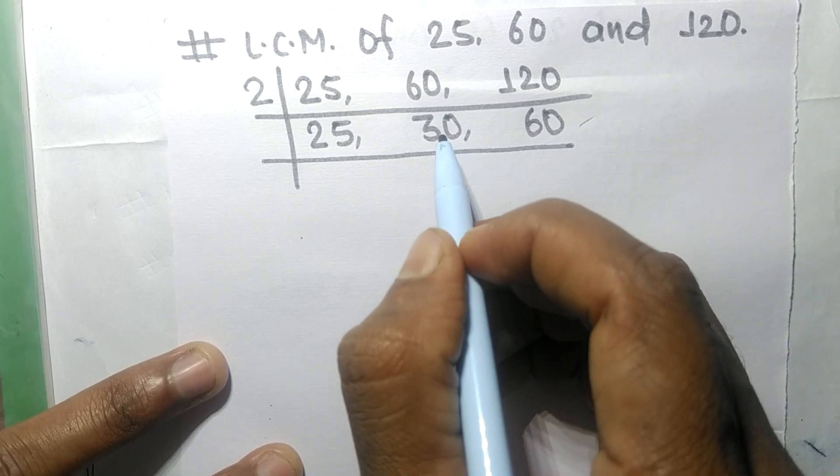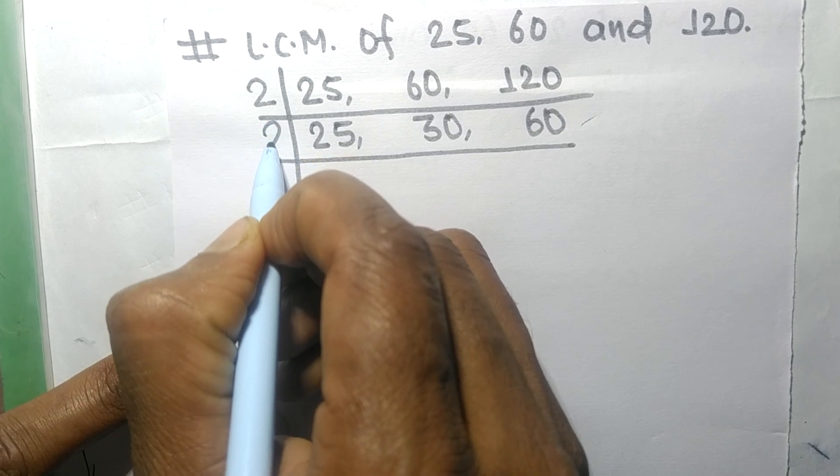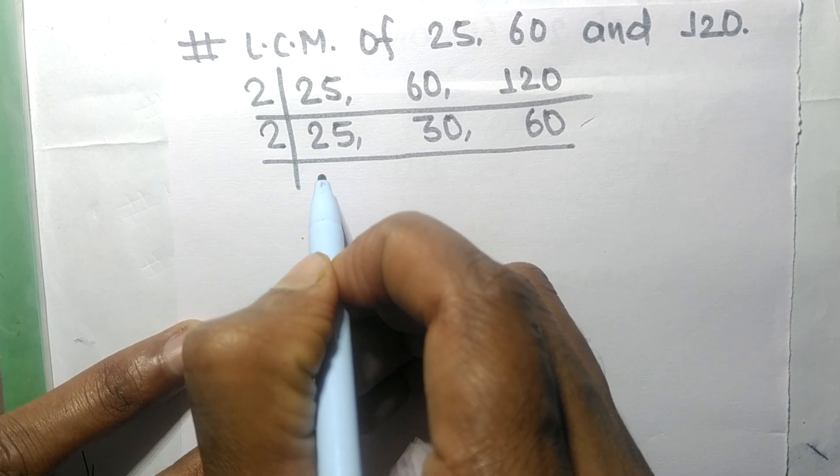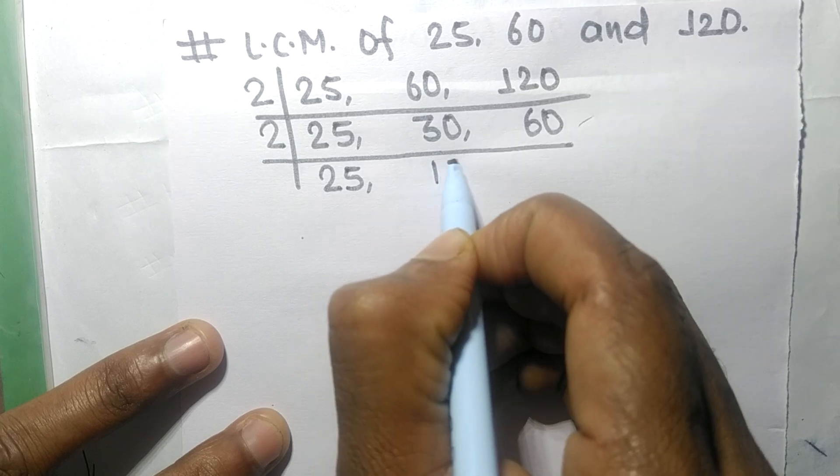Again, this 30 and 60 are exactly divisible by 2, 25 not divisible so it is same. 2 times 15 means 30, 2 times 30 means 60.